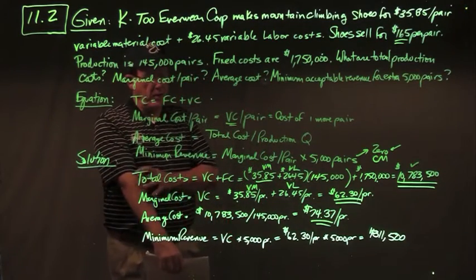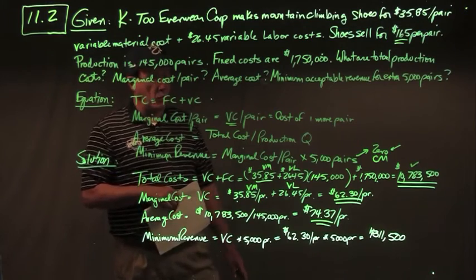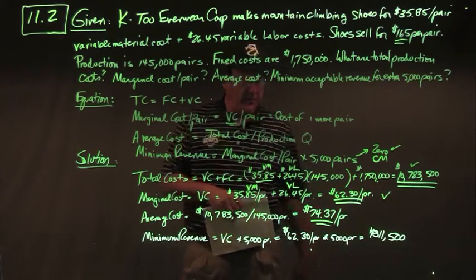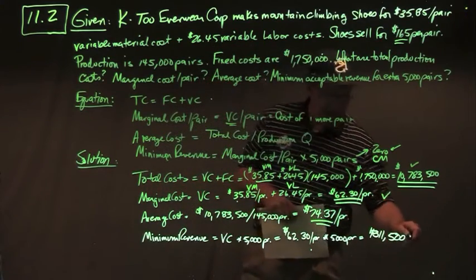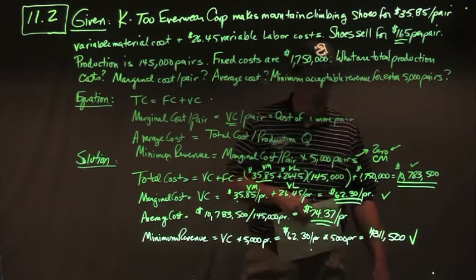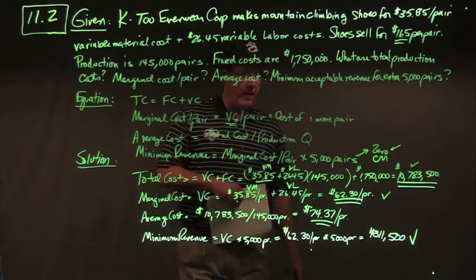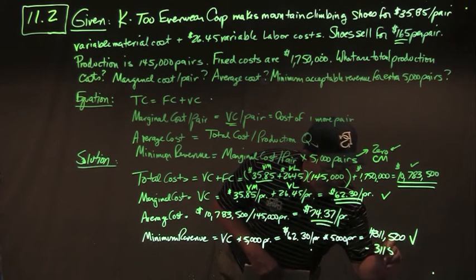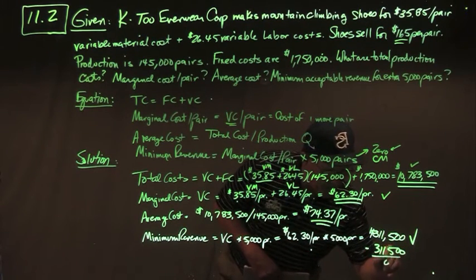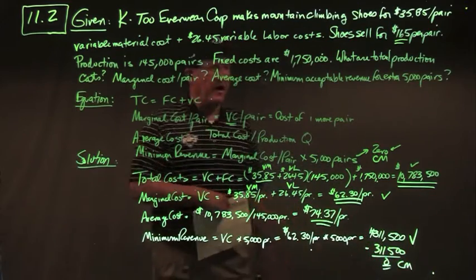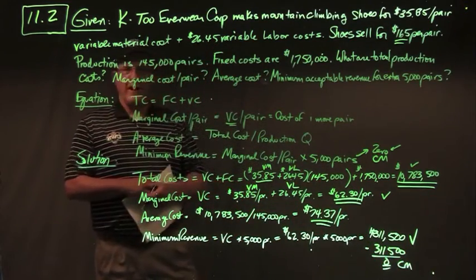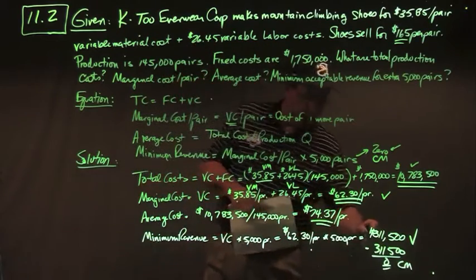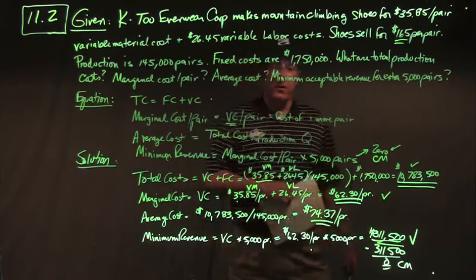The minimum acceptable revenue for a one-time 5,000-pair special order: take variable cost per pair of $62.30 times 5,000 pairs, giving a minimum acceptable sales value of $311,500. Variable cost would be $311,500 and contribution margin would be zero — that's the minimum acceptable sales dollar value. There are your answers to problem 11.2.